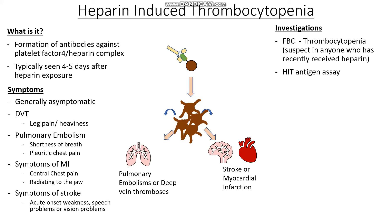We can also do a HIT antigen assay to detect the presence of activated heparin and platelet factor 4 complexes in the blood. This is a highly sensitive test, picking up most cases at up to 99%, but it's not very specific and has a high false positive rate. To address this, we can do a HIT functional assay, which looks at the action of the antibodies against the platelet factor 4 and heparin complexes.